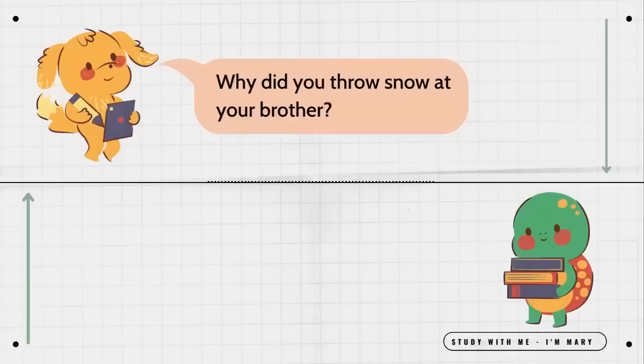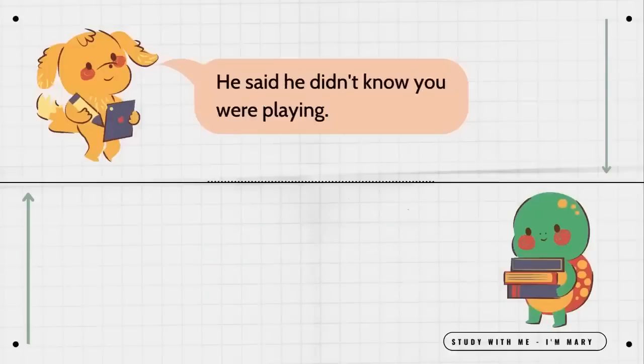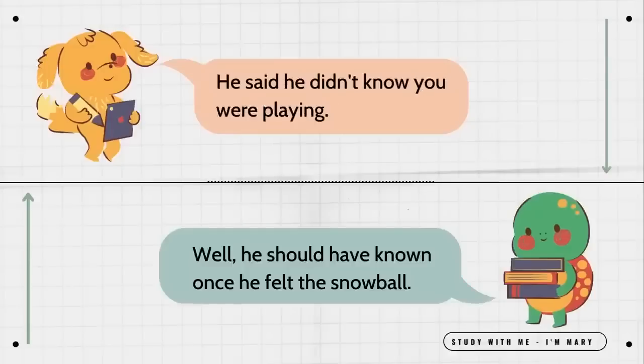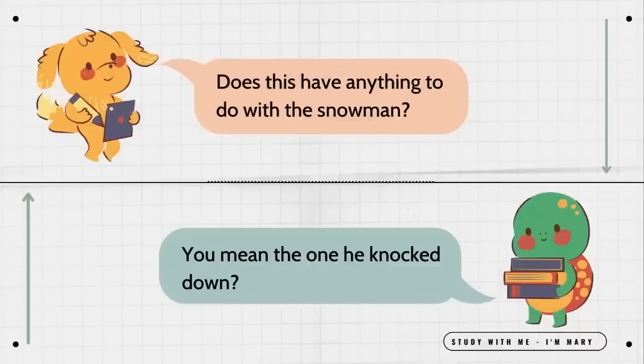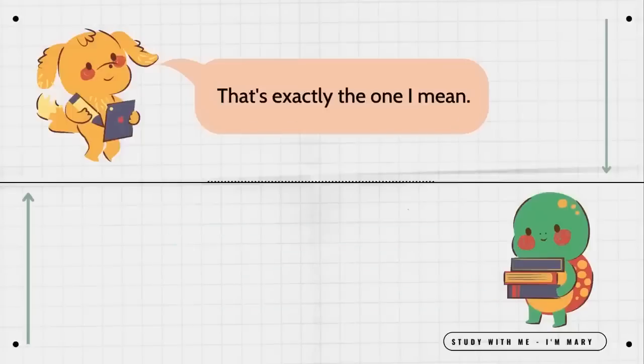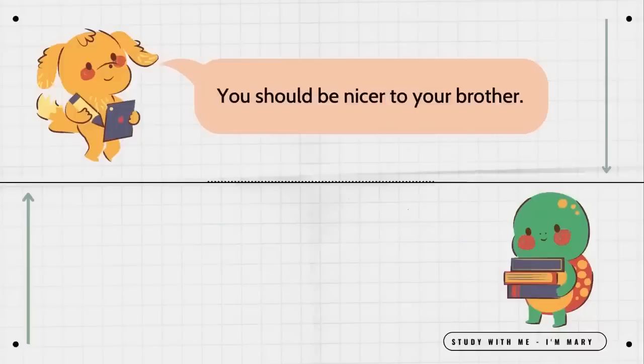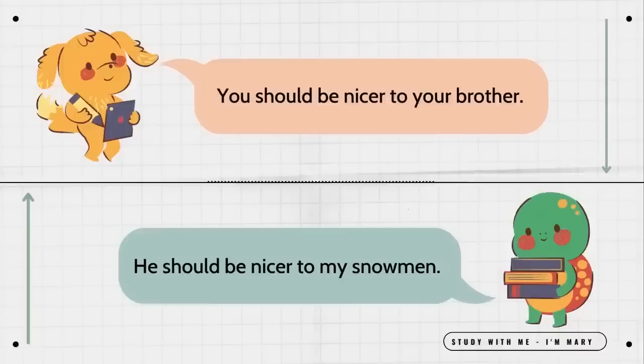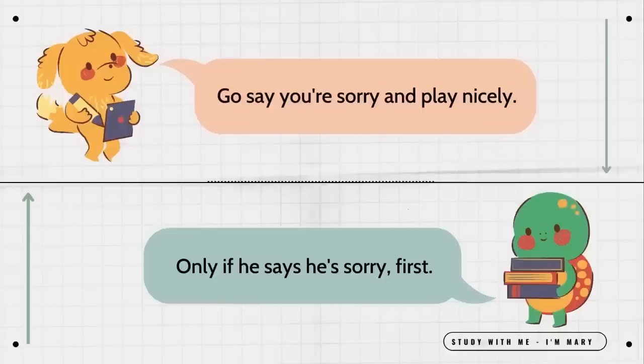Why did you throw snow at your brother? It was a snowball fight. He said he didn't know you were playing. Well, he should have known once he felt the snowball. Does this have anything to do with the snowman? You mean the one he knocked down? That's exactly the one I mean. Maybe, but I just wanted to have a snowball fight. You should be nicer to your brother. He should be nicer to my snowmen. Go say you're sorry and play nicely. Only if he says he's sorry first.